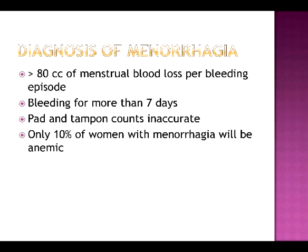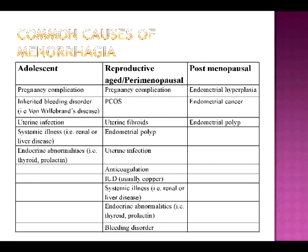Only about 10% of women with clinically defined menorrhagia are anemic. The differential diagnosis of menorrhagia is vast and includes bleeding disorders, uterine structural lesions, systemic illness, and pregnancy complications. Some women may not have any pathologic cause of their menorrhagia.